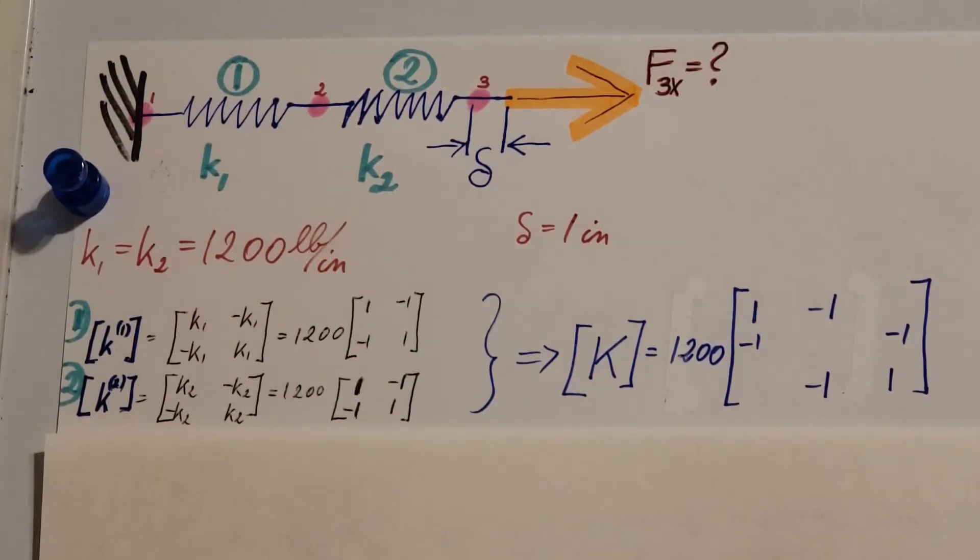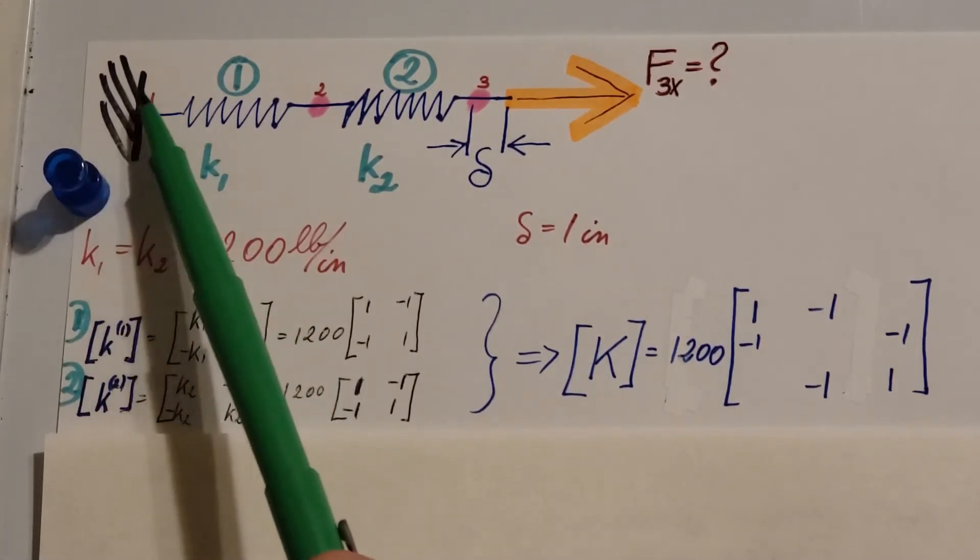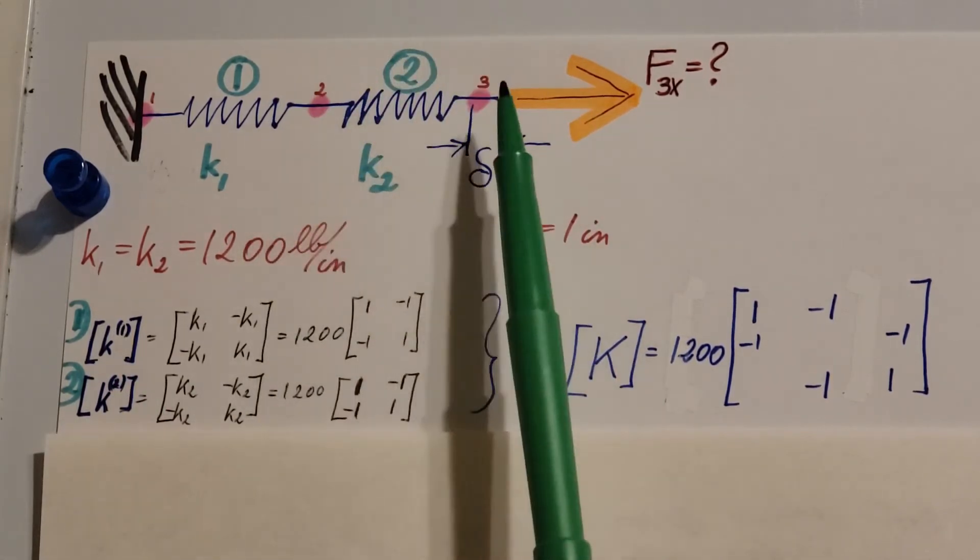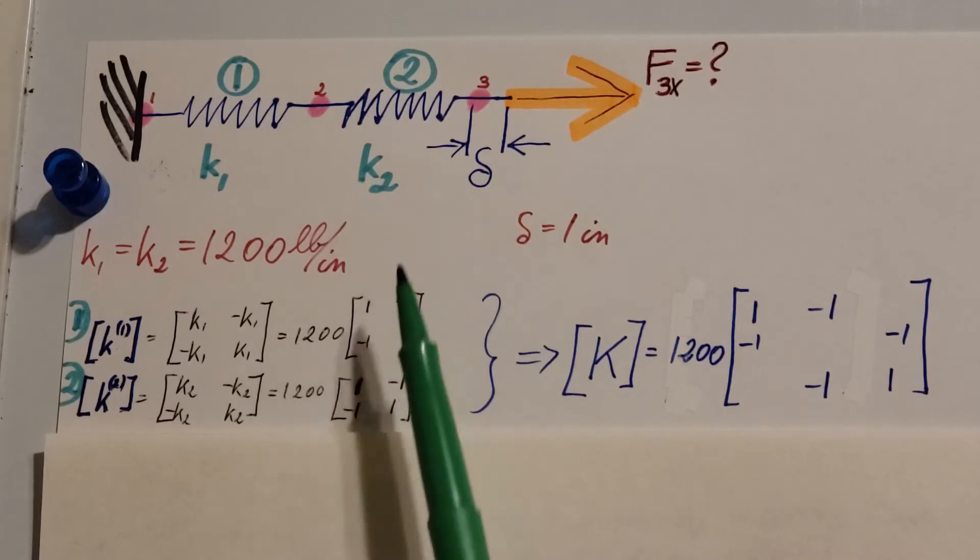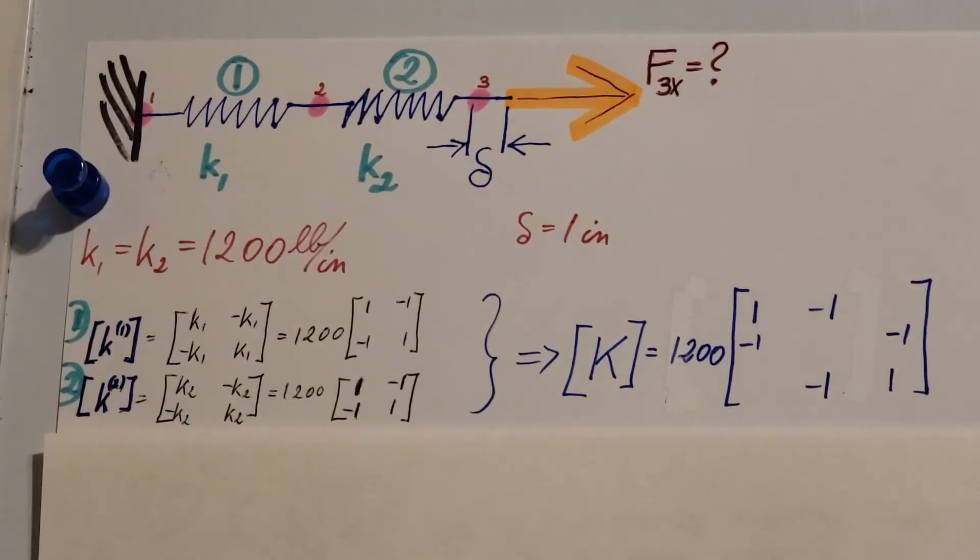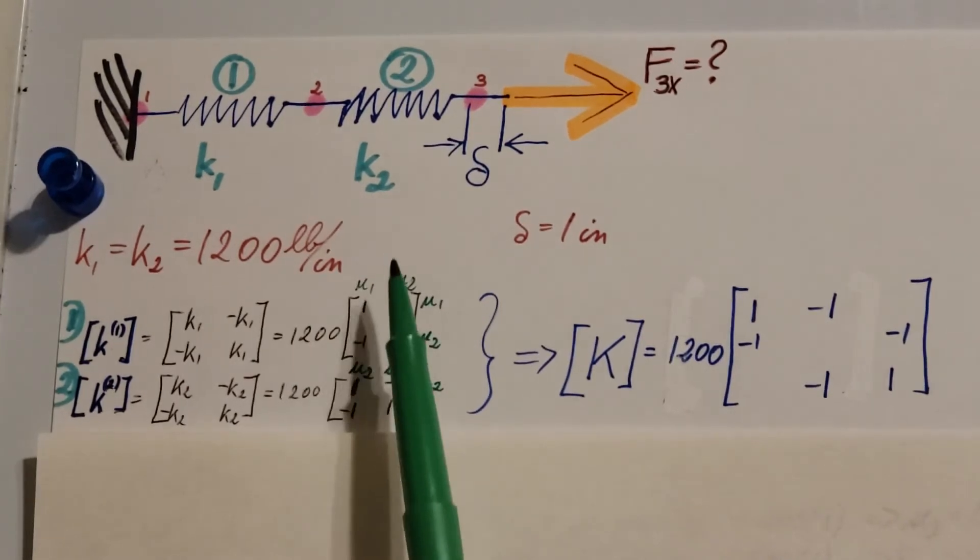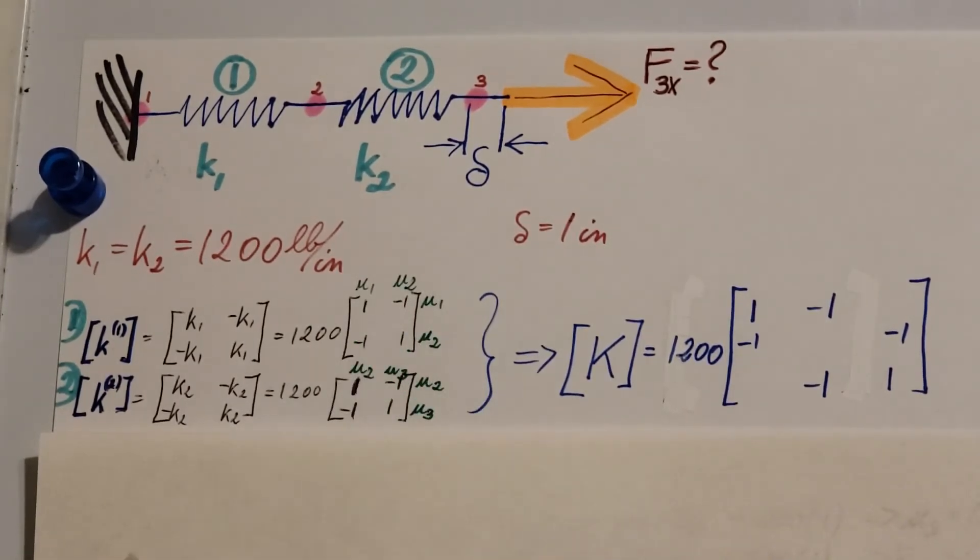But behind the scenes there is a very important distinction that we need to make. Element 1 is bordered by points 1 and 2. Element 2 is bordered by points 2 and 3. We need to represent these over here. And in order to, don't forget, I like to write it right here above and next to it. U1, U2, U1, U2, for element 2, U2, U3, U2, and U3.